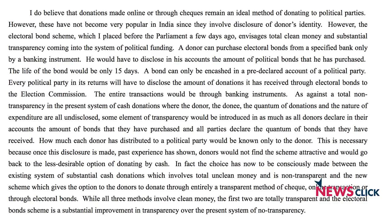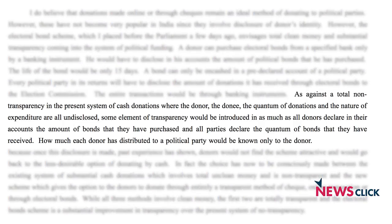Let me read out what the finance minister is saying. He claims it will introduce greater transparency, saying: 'As against total non-transparency in the present system of cash donations — where the donor, the donee, the quantum of donations and the nature of expenditure are all undisclosed — some element of transparency would be introduced in as much as all donors declare in their accounts the amount of bonds purchased and all parties declare the quantum of bonds received.' By his own admission, this is only a small step, and it can be argued that this scheme, like others, can be misused — leading to a more opaque system rather than a more transparent one.